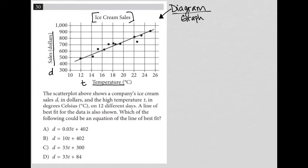On 12 different days, a line of best fit for the data is also shown. So we see that this is our line of best fit attached to that circle.